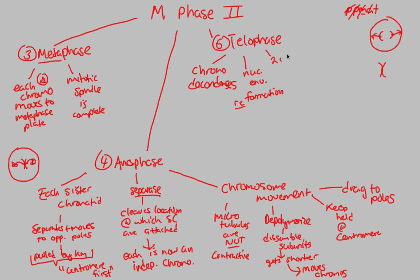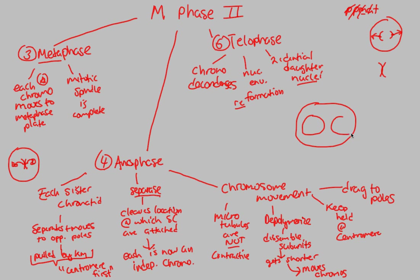At the end of Telophase, we have two identical daughter nuclei — not daughter cells, but daughter nuclei. This is a very important distinction. We do not have two separate cells at the end of Telophase; we only have two separate cells once we've literally split the cell. What we have is one big cell with two independent nuclei. Telophase gives us two identical daughter nuclei with genetic material decondensed in chromatin format. The next step is cytokinesis — the splitting of the cell right down the middle.